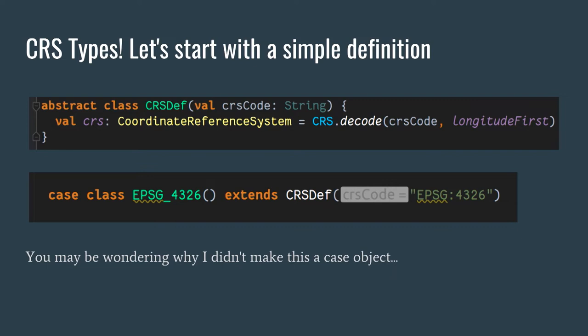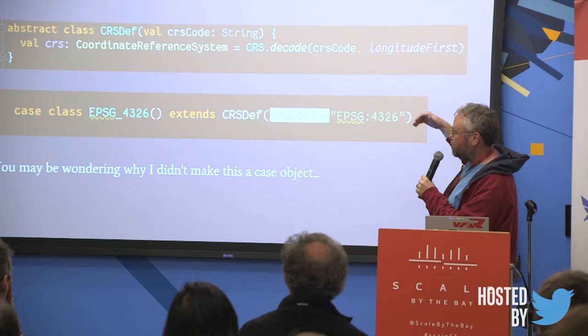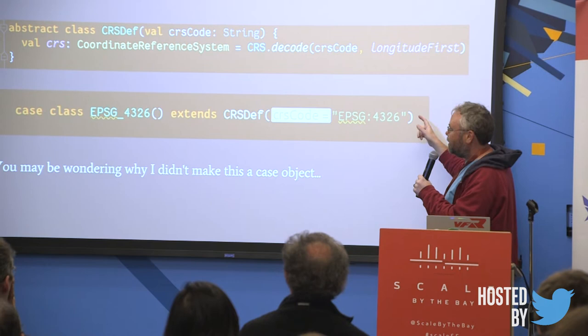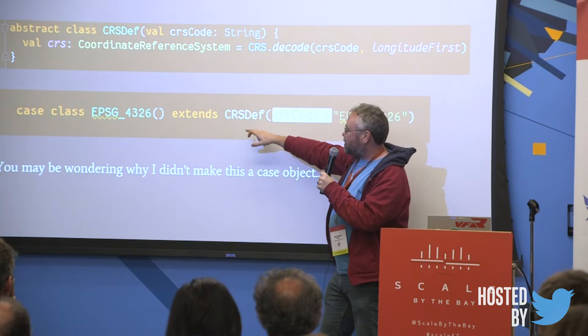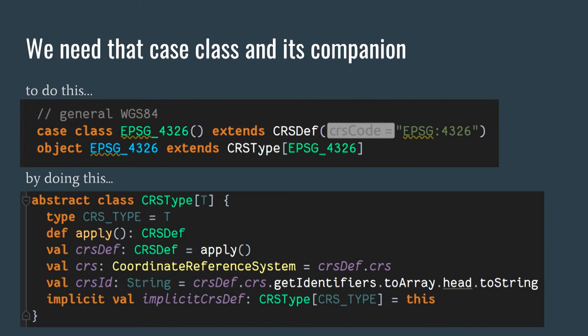Start with a simple definition. I like case classes — they make an excellent basis for an API. Here's an abstract class that is going to be our coordinate reference system definition; it takes a CRS code and does some kind of lookup. We use a library called GeoTools, which has definitions for the EPSG standards — thousands of different CRSs — including the full mathematical model: the datum, the projection, all the information needed.